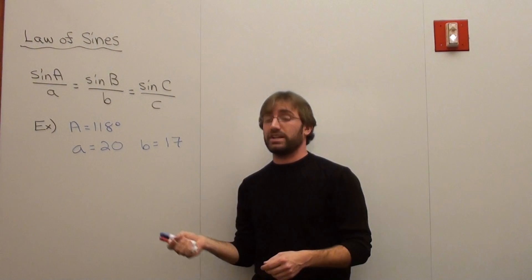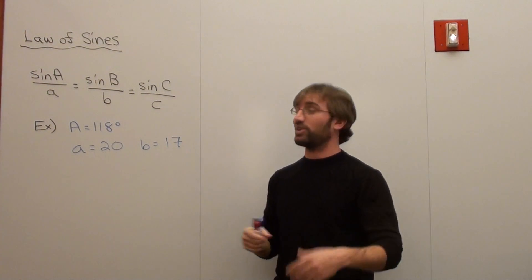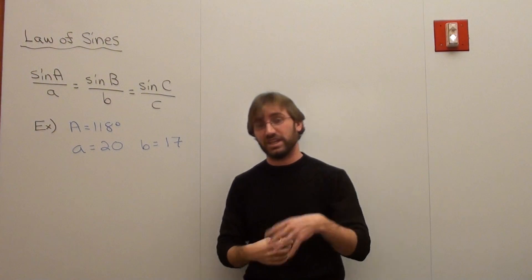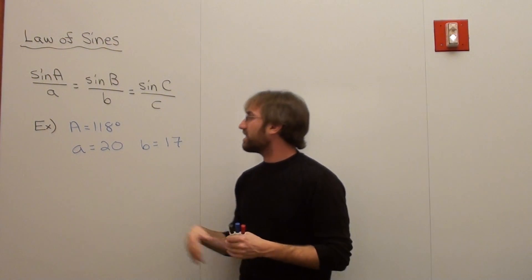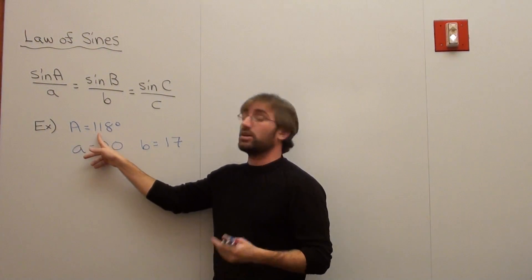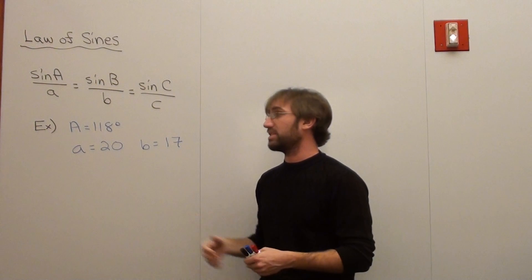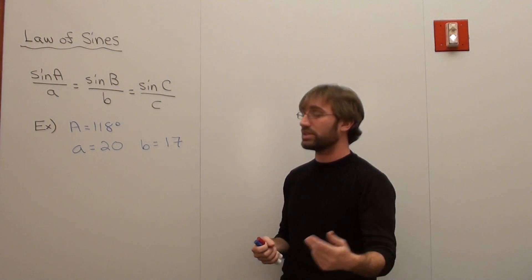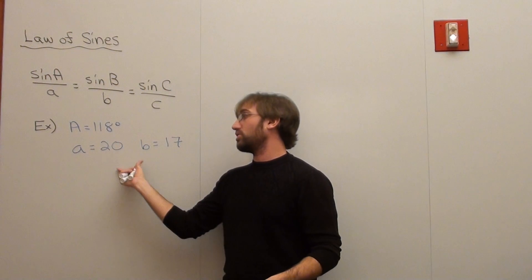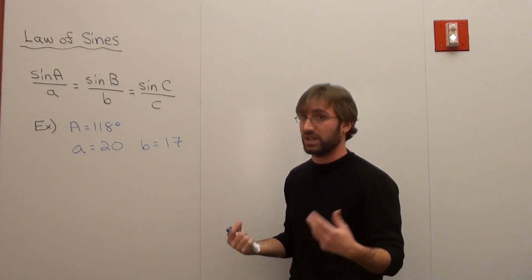Hello again. I'm working with the law of sines here. I've got my law of sines up here where the capital letter stands for the angle and the lowercase letter stands for the side. So I've got this example where angle A equals 118 degrees, its corresponding side equals 20, and B equals 17. This is different because instead of being given two angles, I'm given one angle and two sides, and that angle is opposite one of the sides. It has to be in order to use the law of sines.